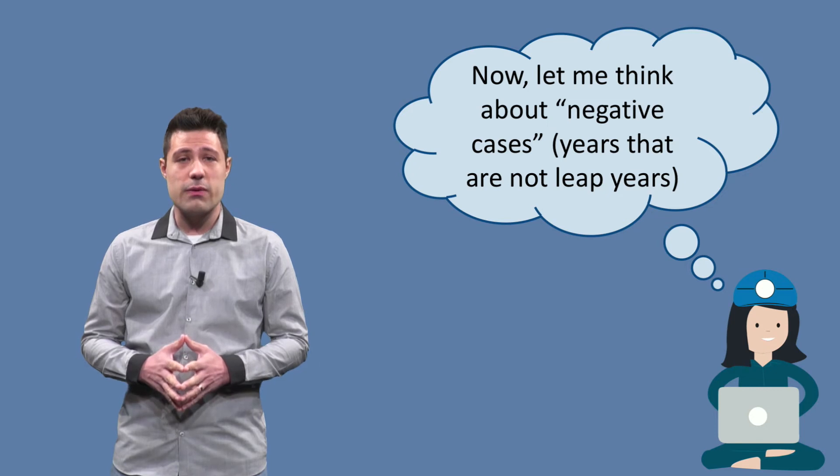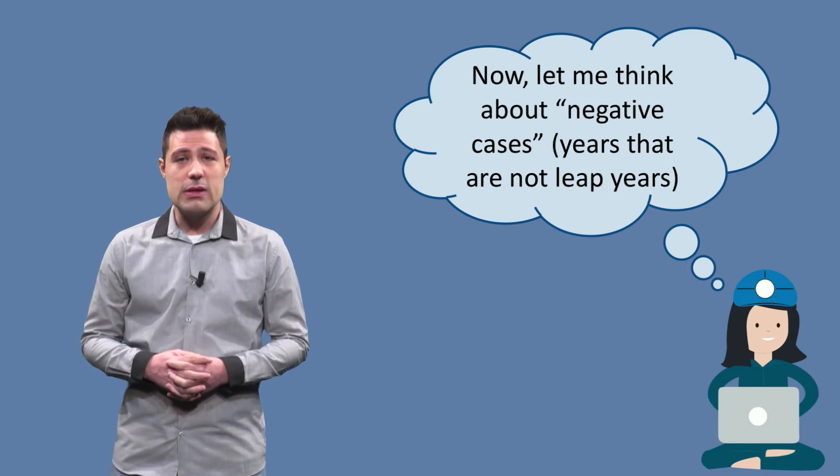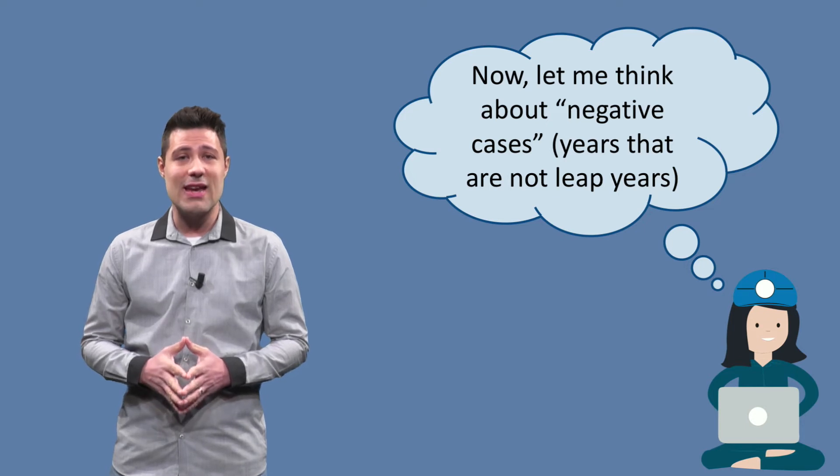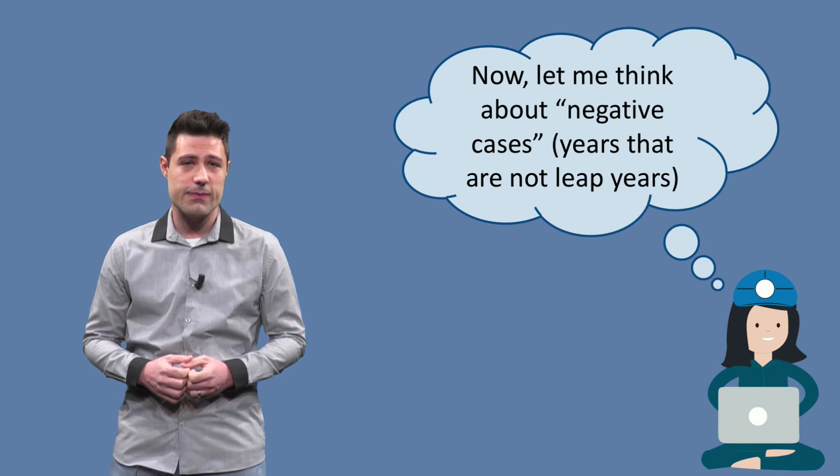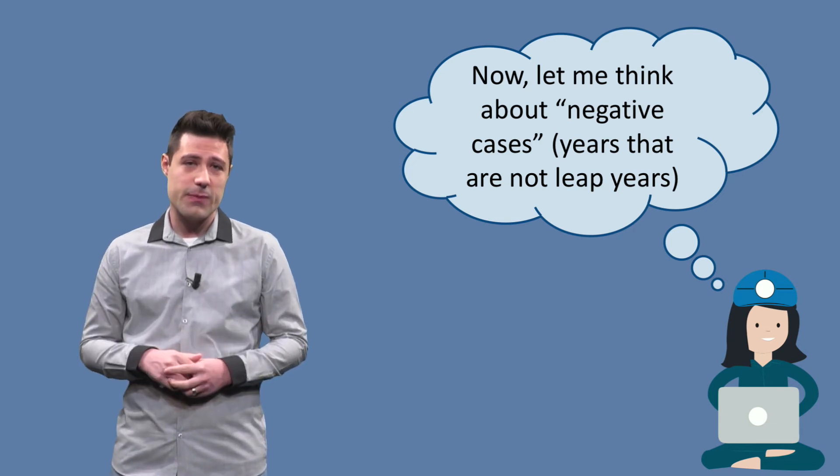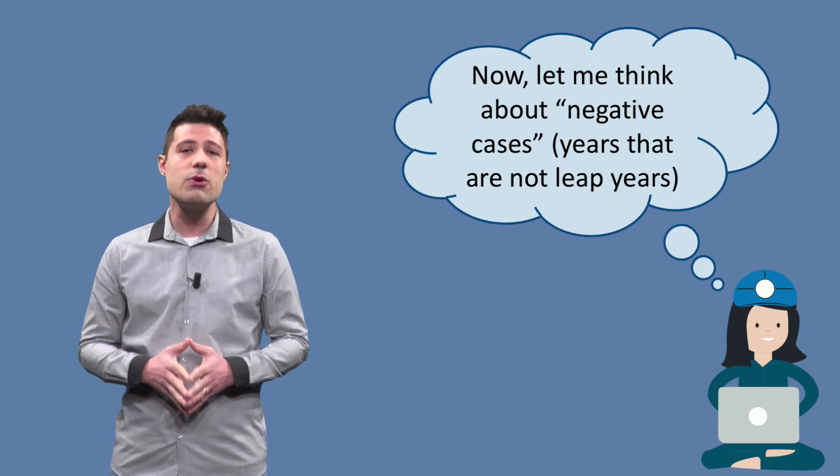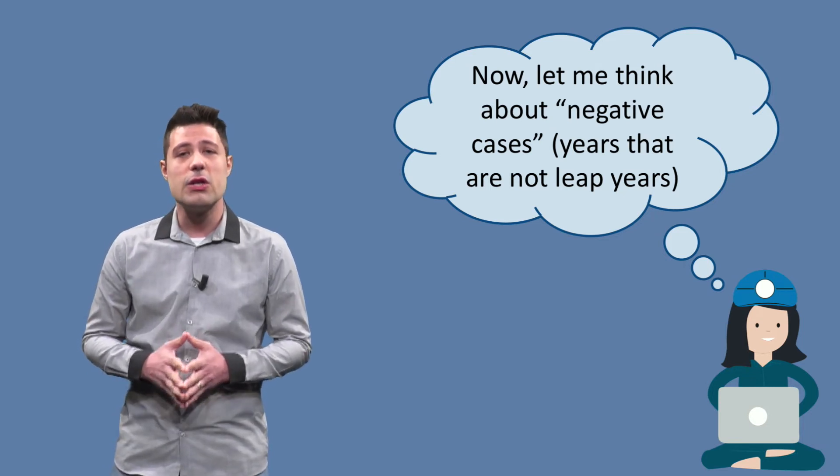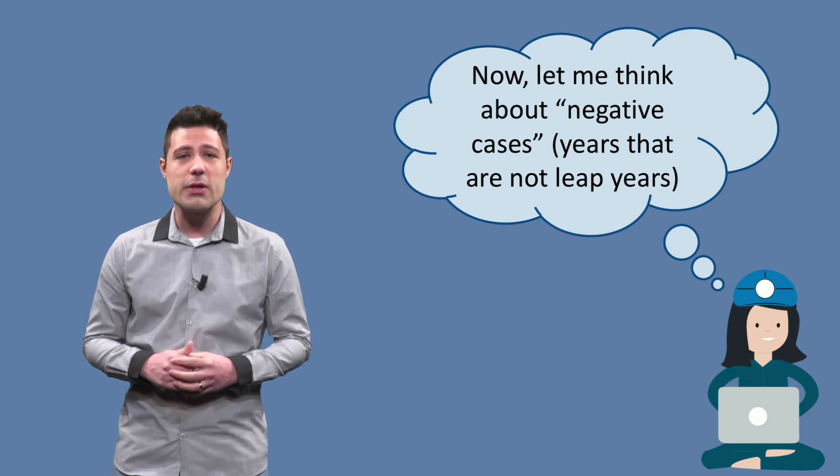For now, we only thought about our program identifying leap years, but we should also make sure that it can identify years that are not leap years. Can you do it? Pause this video and think about partitions that check if our program correctly identifies non-leap years. A tip, there are two more partitions.